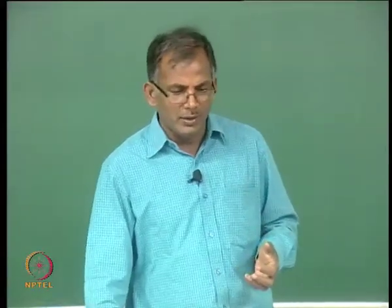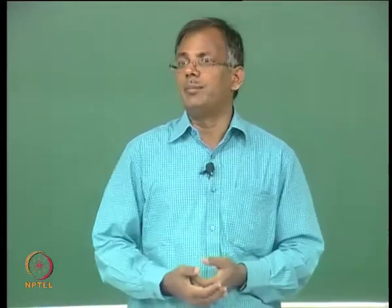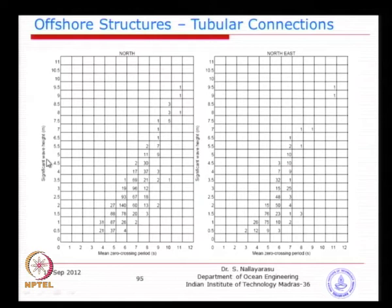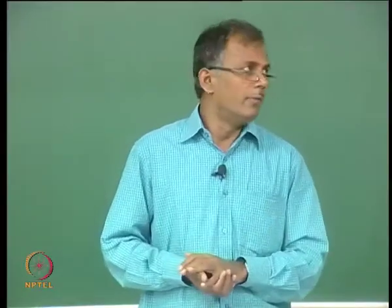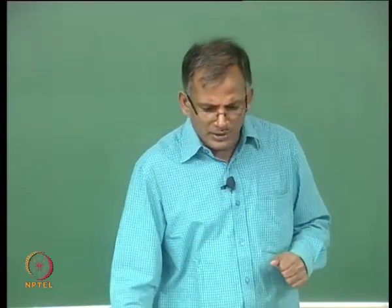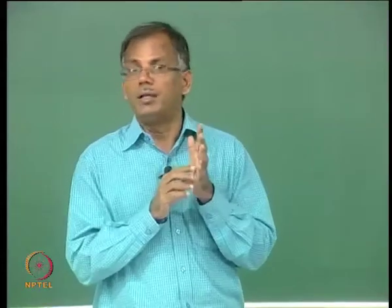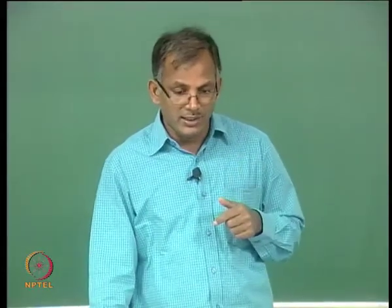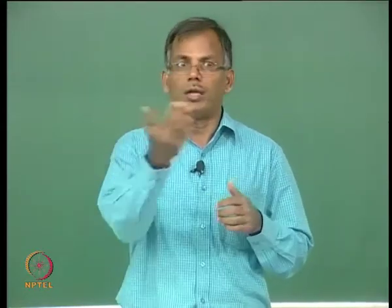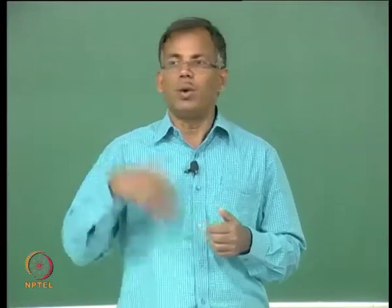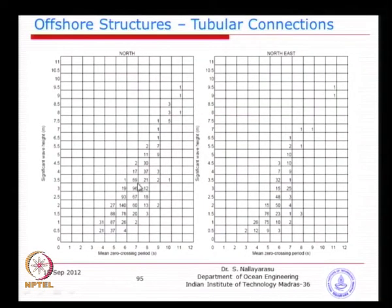Depending on what data is available, you should try to establish the link. You can convert this data into maximum wave height data by simply multiplying the significant wave height by a corresponding factor depending on the storm period. For a three-hour storm period, the multiplication factor is about 1.86 for 1000 waves. What we require is a link between wave height, wave period, and the corresponding occurrences, either as an absolute number or as percentages.